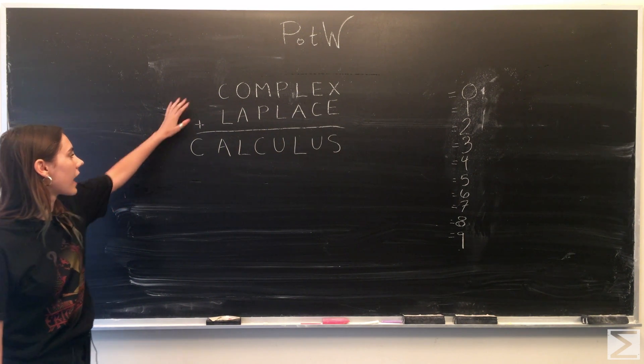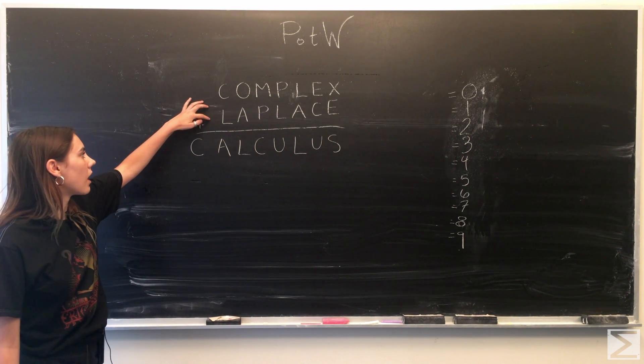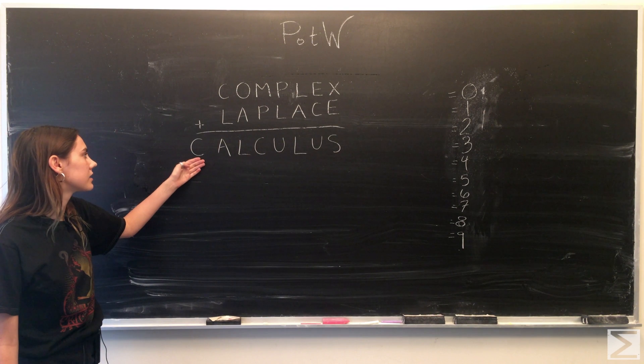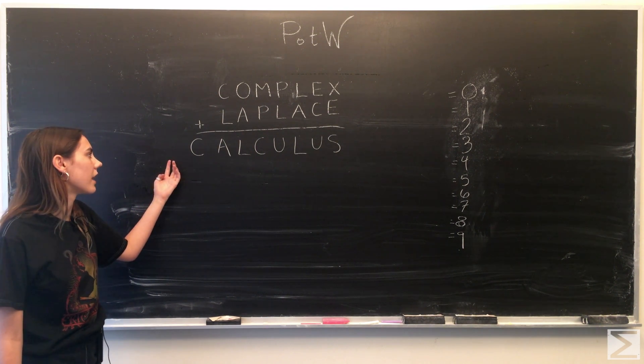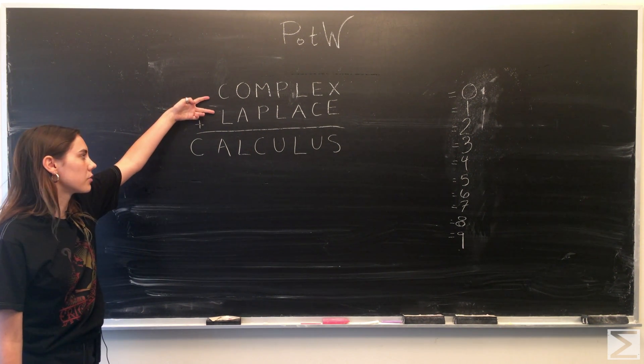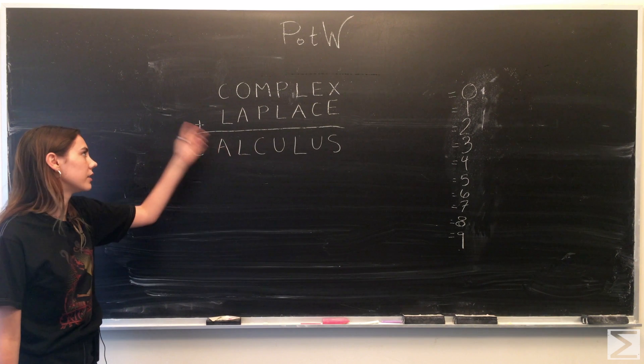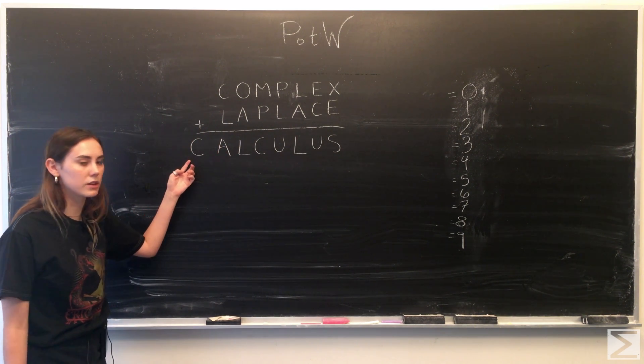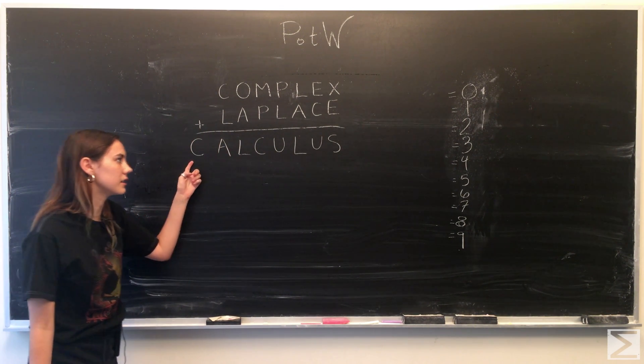If you notice that the sum up top has one more digit than what both of these have, therefore this has to be a carried over 1. So we know immediately that this C has to equal 1.